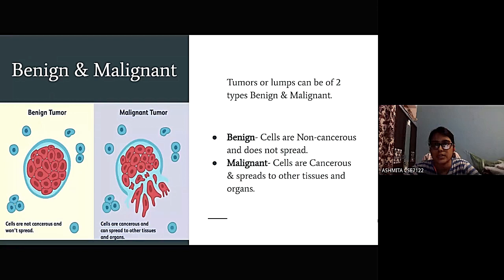These are the two types of lumps, benign and malignant. And you can see this picture over here. This benign tumor is a kind of cancer where cells are not cancerous and they don't spread as much as the malignant tumor where the cells are cancerous and can spread to other tissues and organs as well. These are the two lumps or tumors we find in cancer.